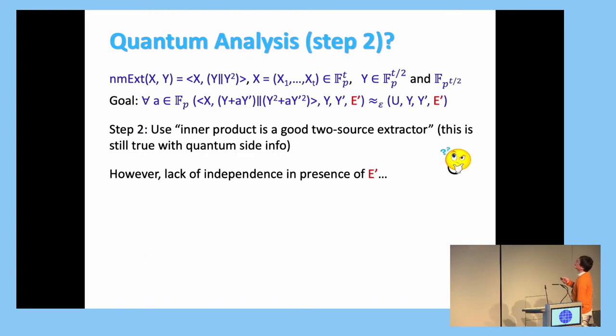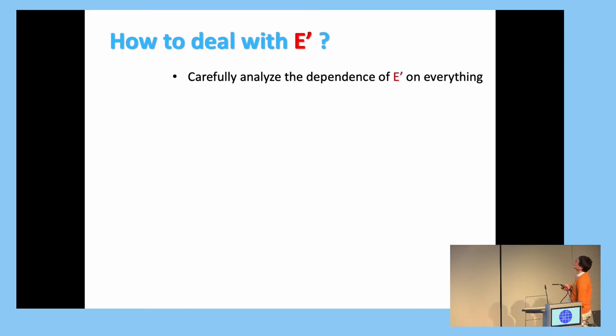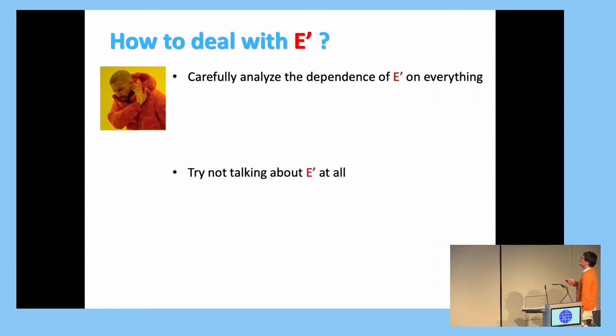OK. So we proved we succeeded in our first step reduction to get this equation we want to prove. But the E' is still here and it's still breaking independence. And that's really annoying. So how do we deal with E'? Do we carefully analyze the independence on everything? No. That's too complicated. So actually, how about just try not to talk about it at all. Yeah, that's much easier.